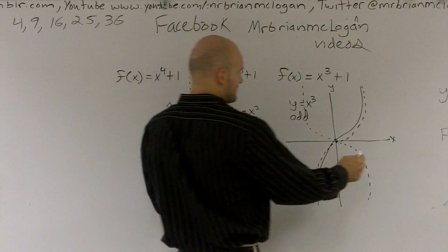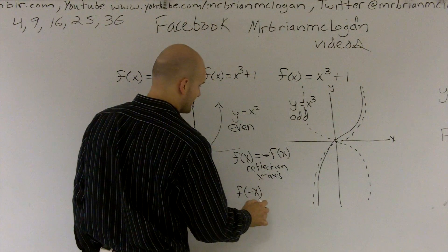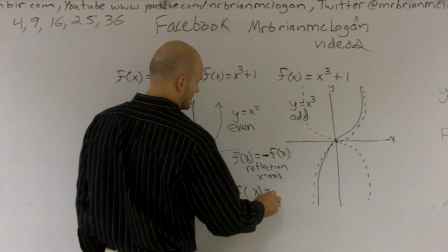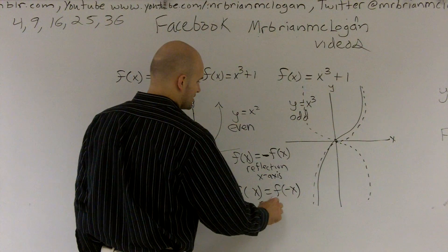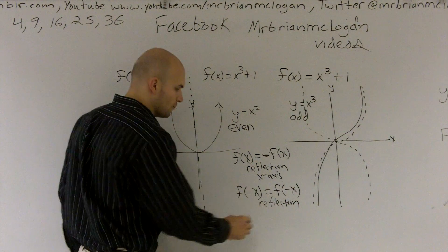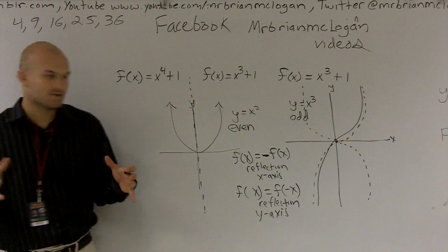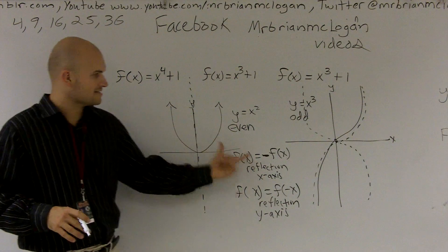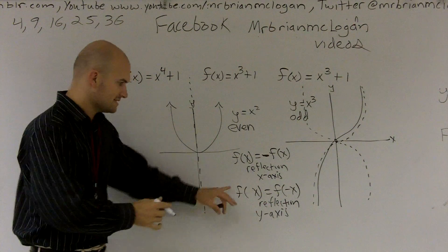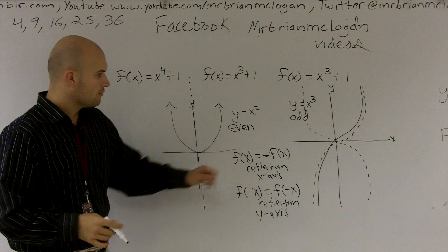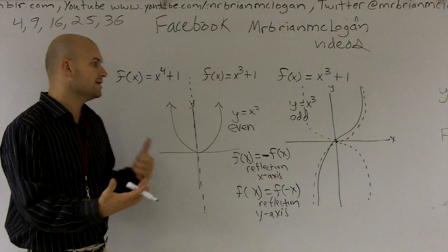And then when we had f of x equal to f of negative x, what that gave us was a reflection about the y-axis. So you can see there's two different reflections about the y-axis and about the x-axis. This is a very important part right here. When I show my algebraic ways, that will let you guys see what's happening.